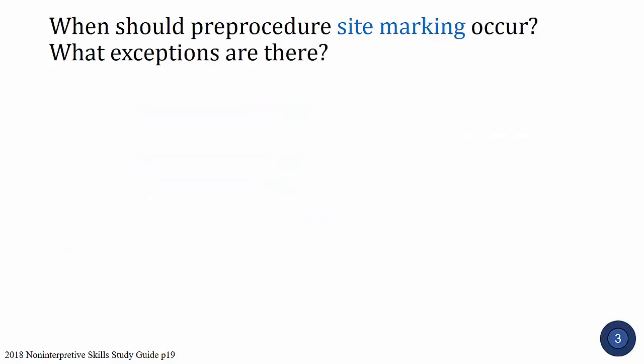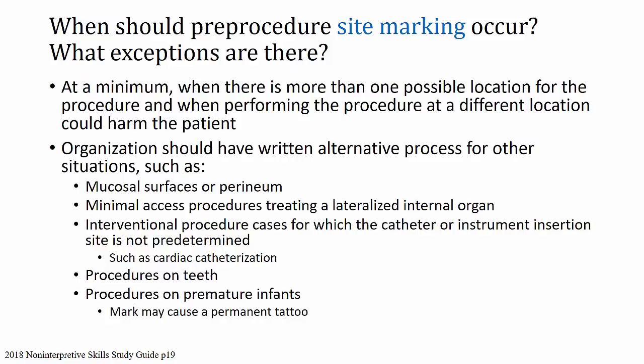Next question: when should pre-procedure site marking occur and what exceptions are there? At a minimum, site marking should occur when there is more than one possible location for the procedure and when performing the procedure at a different location could harm the patient. Exceptions include mucosal surfaces or the perineum where you can't directly mark, minimal access procedures treating a lateralized internal organ, interventional procedures where the catheter insertion site is not predetermined such as cardiac catheterization, procedures on teeth, and procedures on premature infants because a mark may cause a permanent tattoo. For any exception, the organization must have a written alternative process.